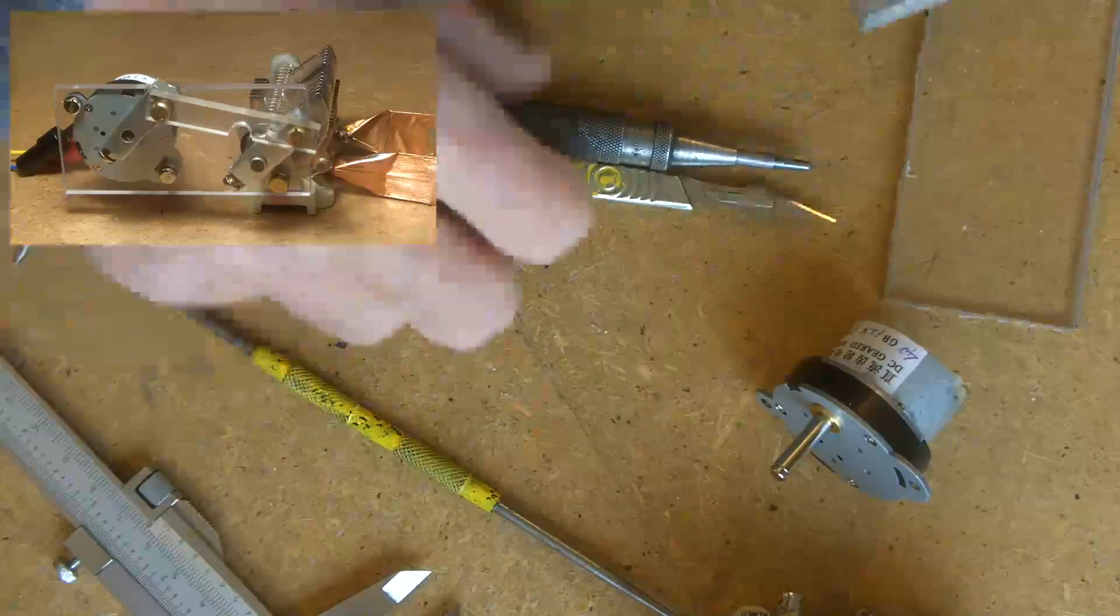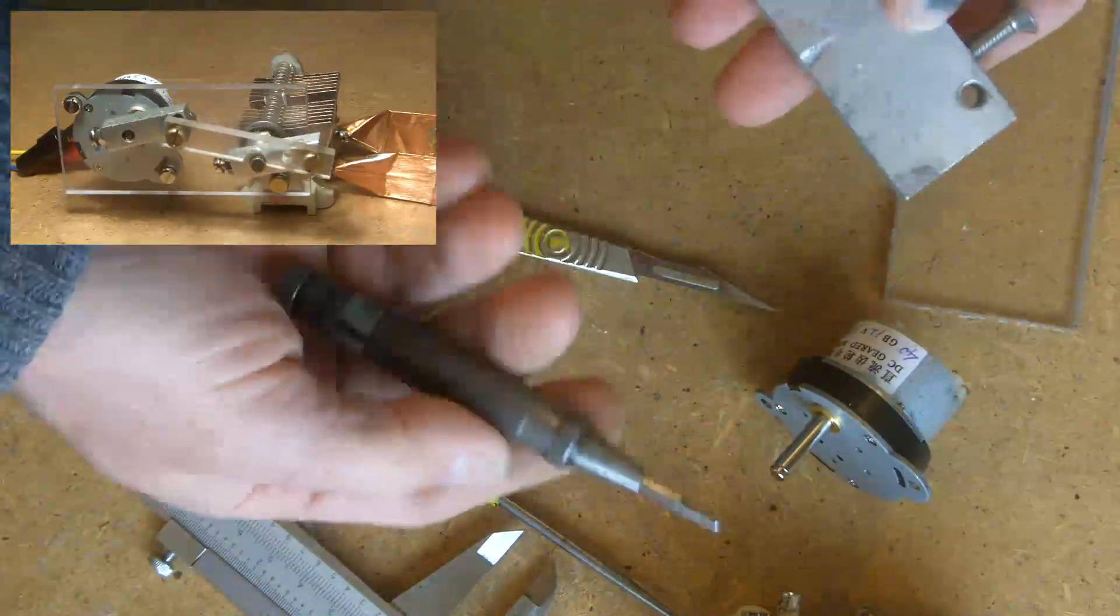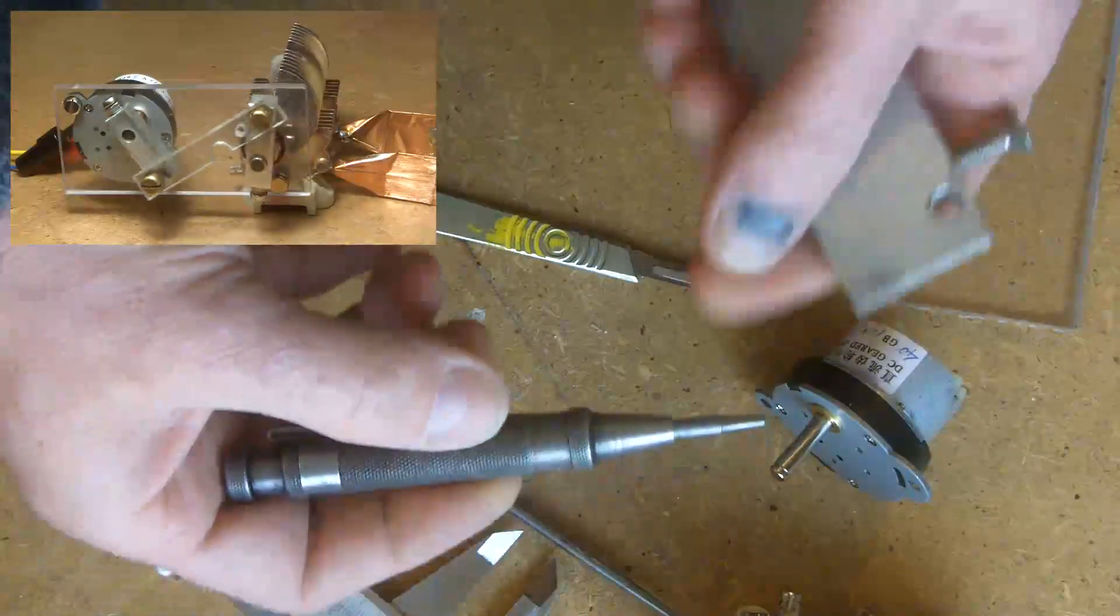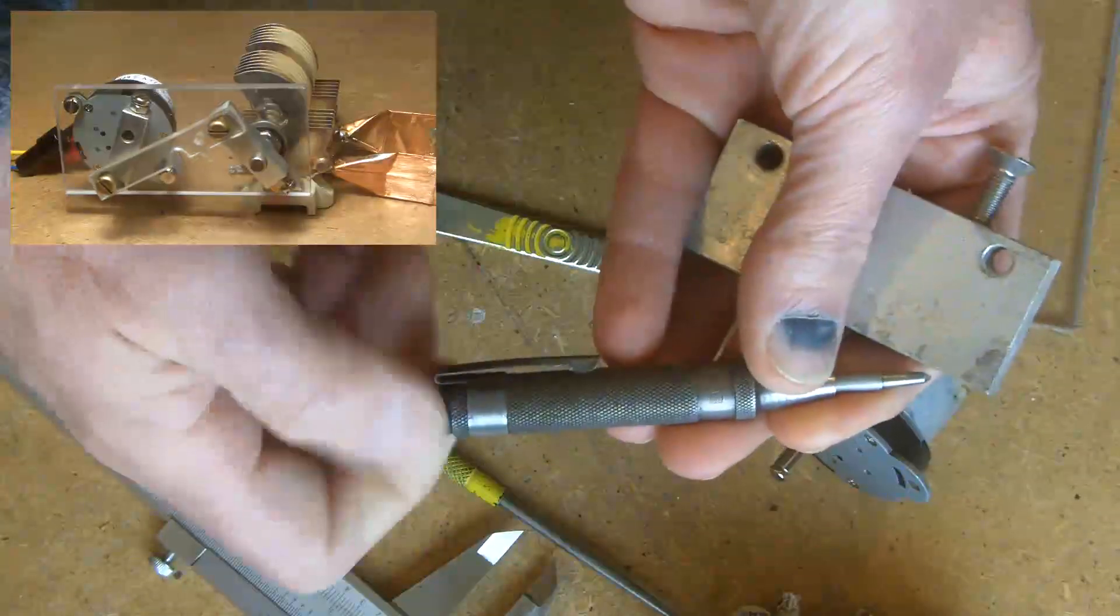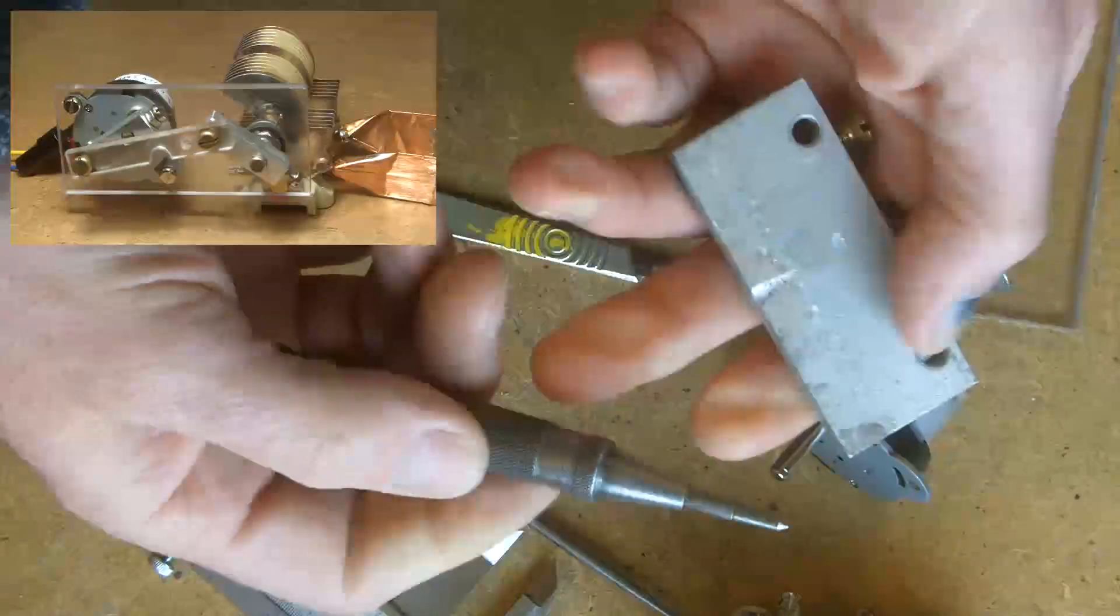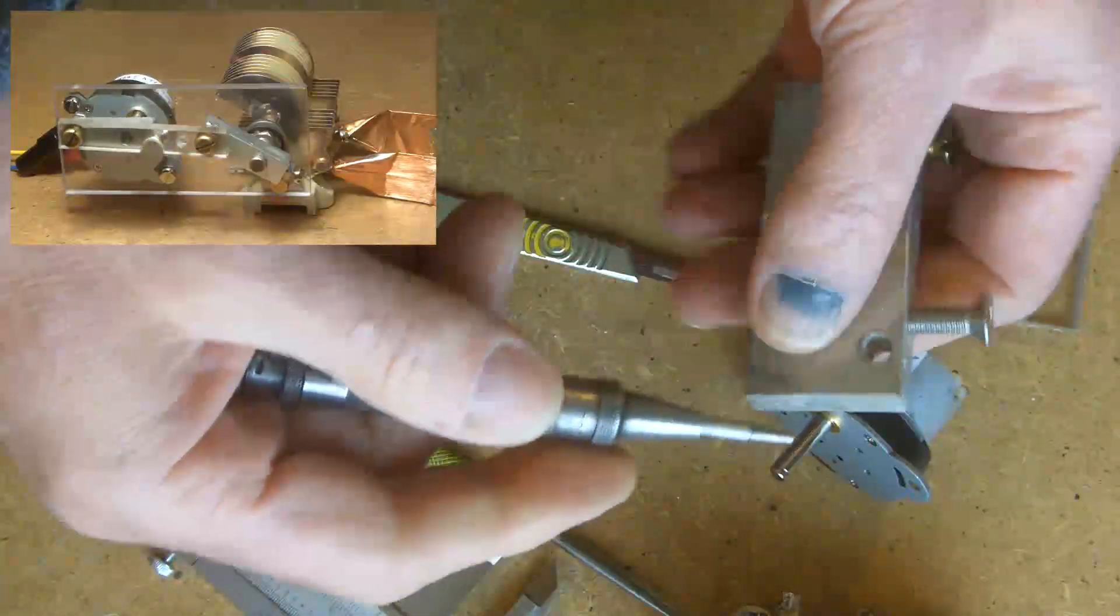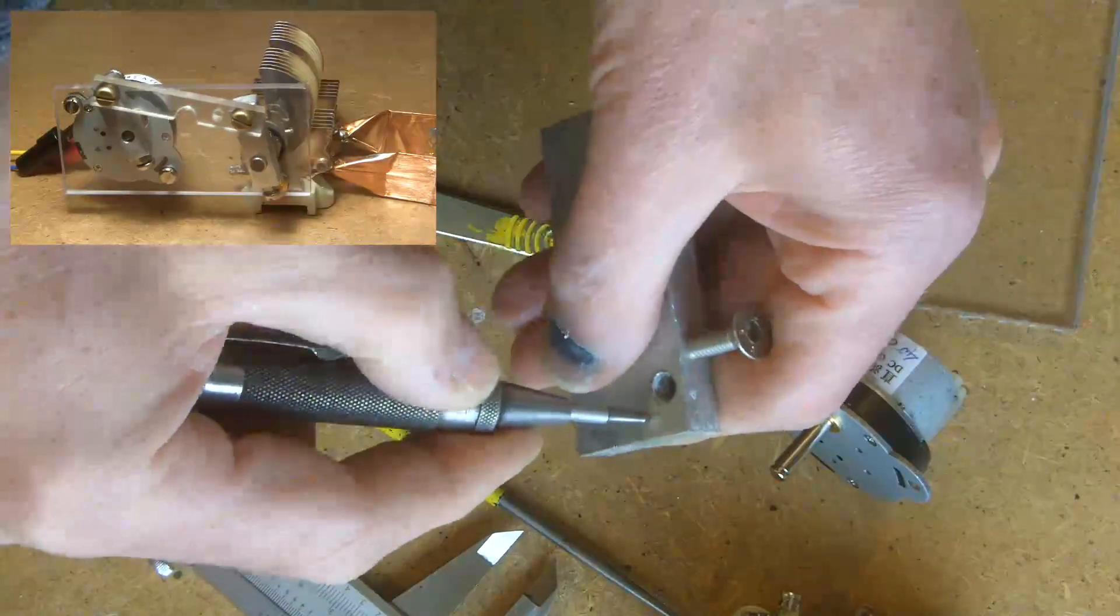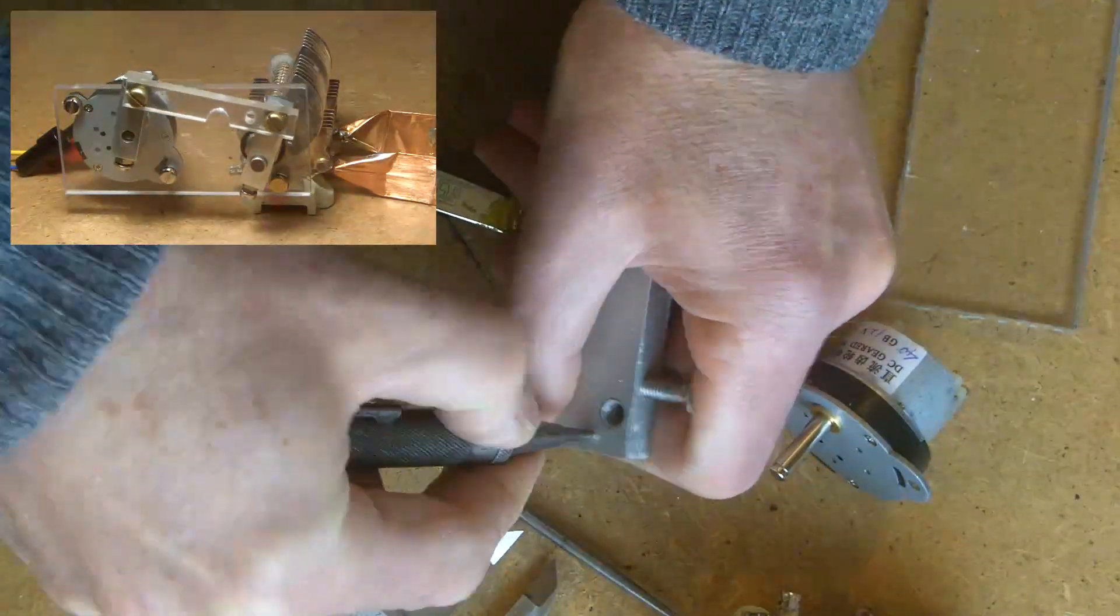What else have I got here? Scribe, the vernier. I don't know if you've seen one of these before, this is an automatic dot punch and it's adjustable so you can have what you'd call a light dot or a heavy dot. And you line the point up on where you want to make the mark and then you simply press it.